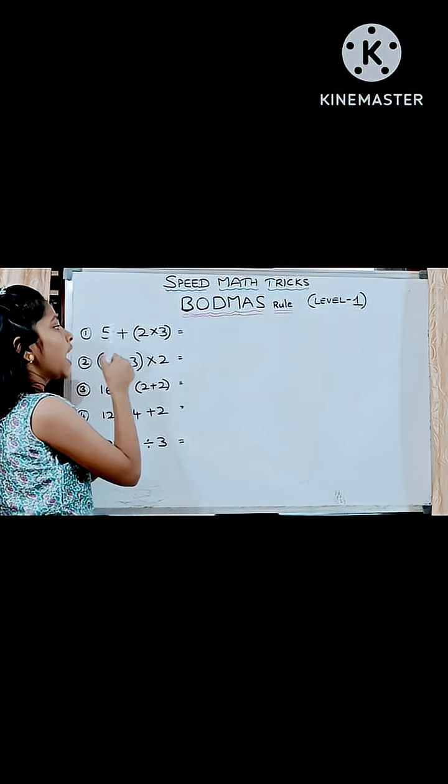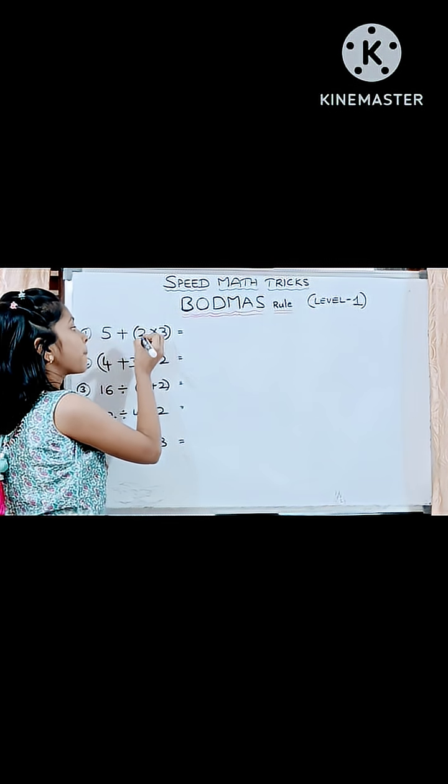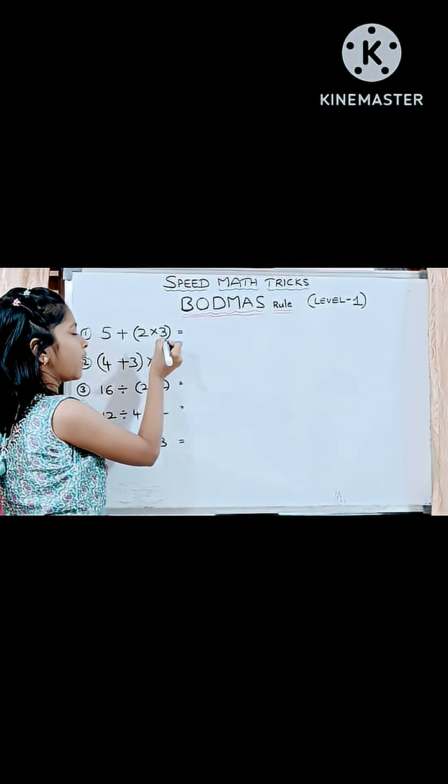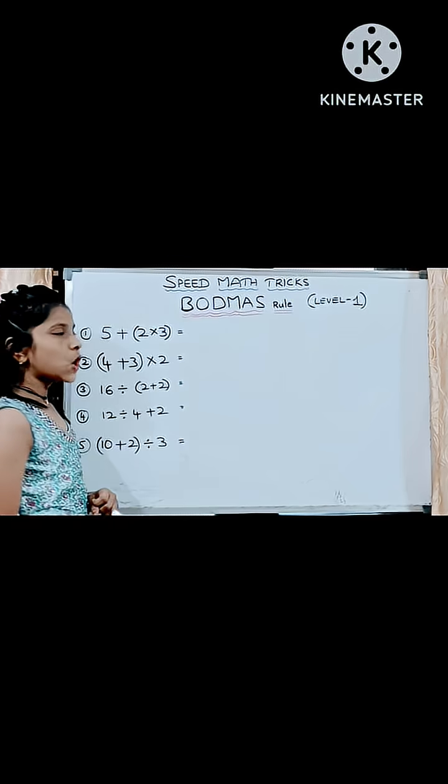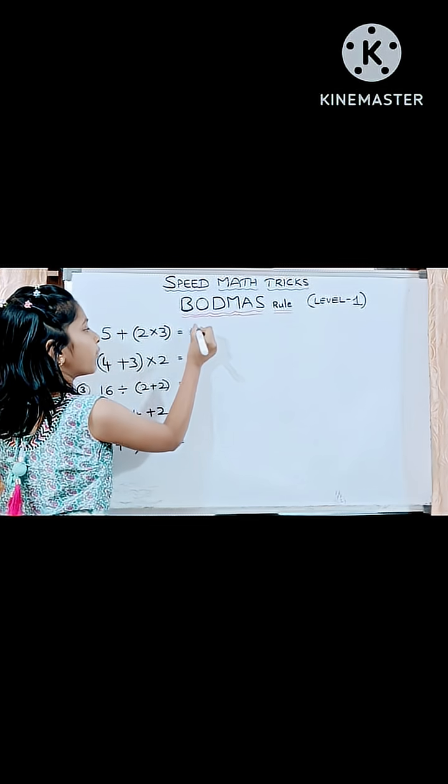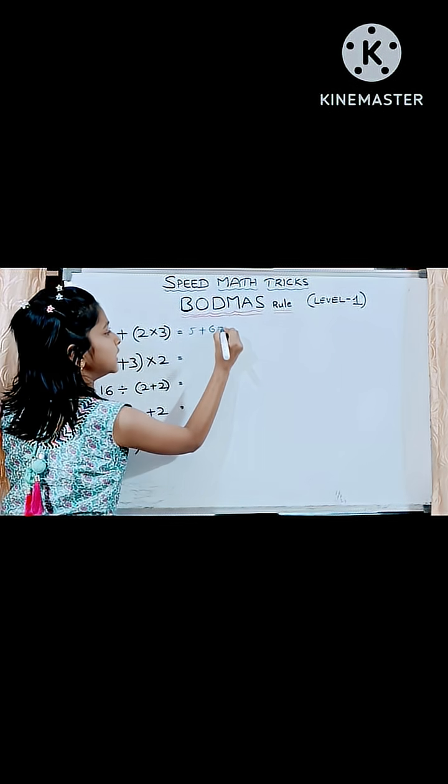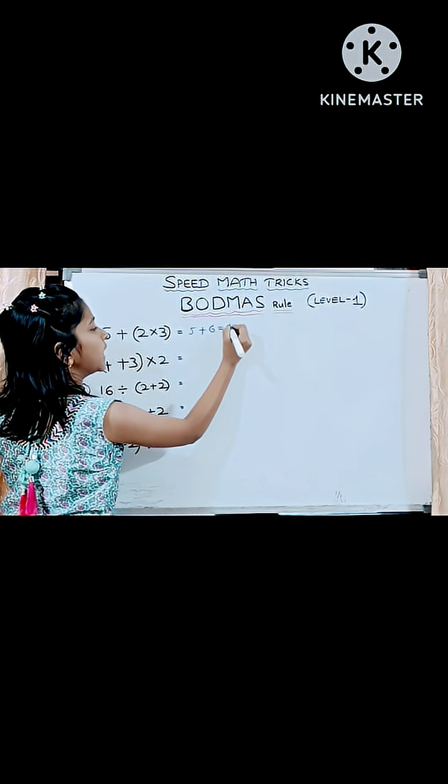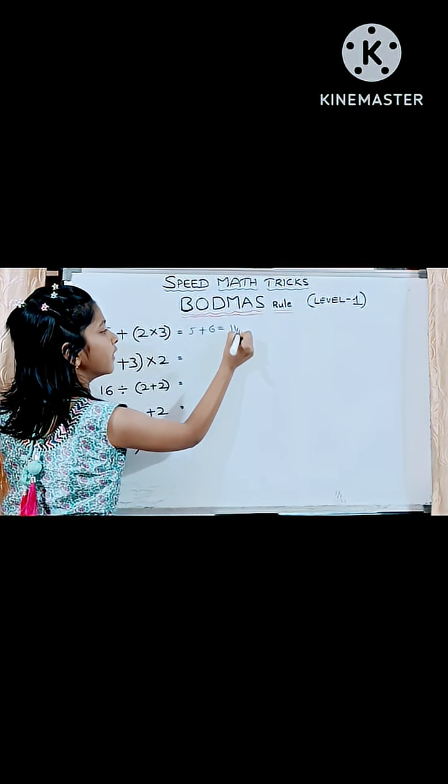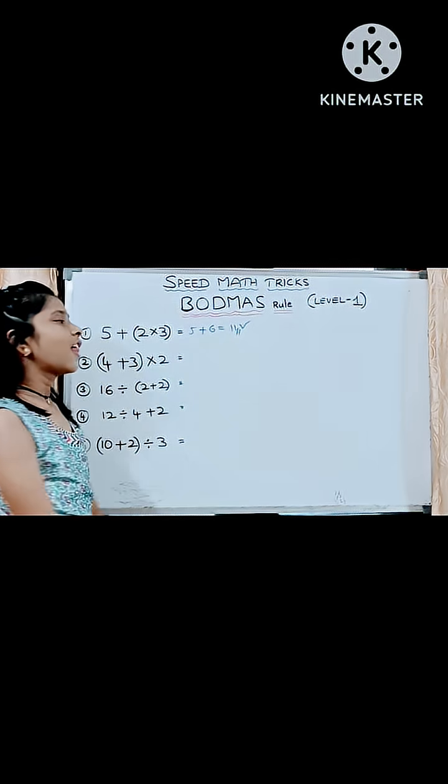This first question, according to BODMAS rule, we need to solve first bracket value, that addition value. So, 5 plus 2 multiplied by 3 is 6, is equals to 5 plus 6 is 11. That's all.